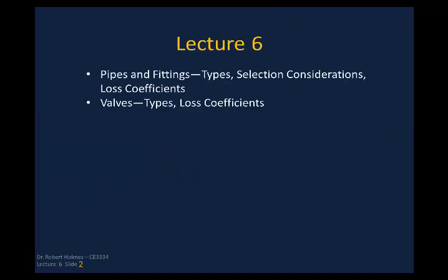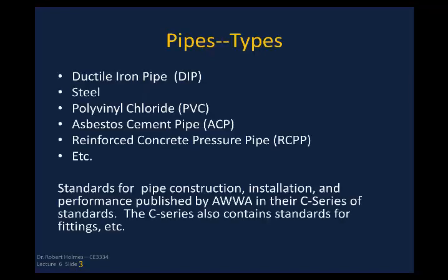This slide shows what we're going to cover. As I mentioned earlier in lectures three and four, the largest outlay of capital in any kind of design is going to be the pipe, so selecting the right pipe is important. There are various types: ductile iron pipe (DIP), steel pipe, polyvinyl chloride (PVC), asbestos cement pipe (ACP), and reinforced concrete pressure pipes (RCPP). The standards for these are contained in the American Water Works Association C-series of standards.